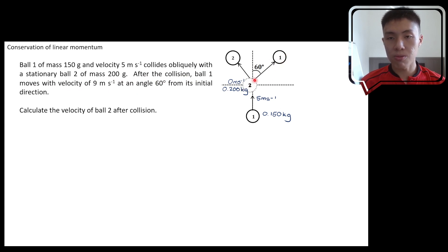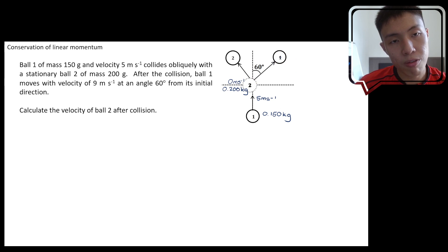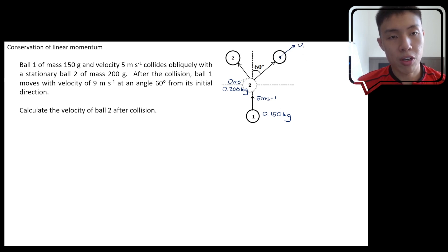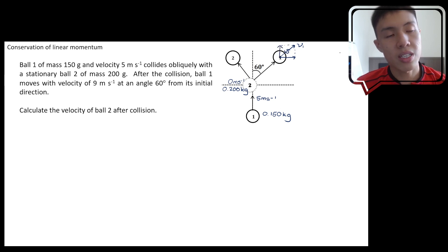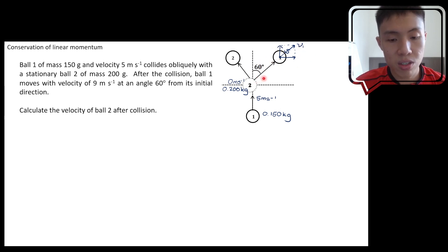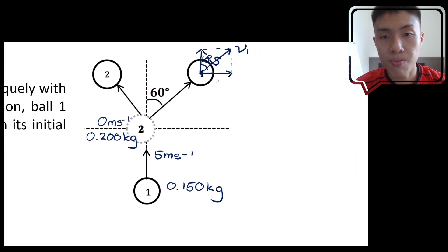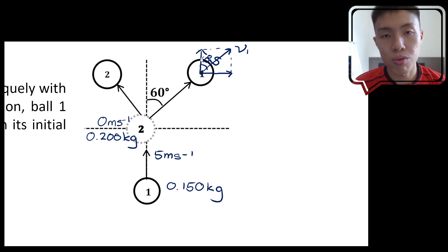So ball 1 is now moving at 60 degrees from its initial direction. We label the final velocity of ball 1 pointing from the center of the ball. Because it is at an angle, we can resolve it into its x-component and y-component. The angle of 60 degrees is positioned near the y-component and away from the x-component.